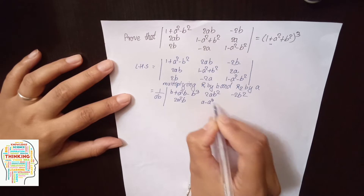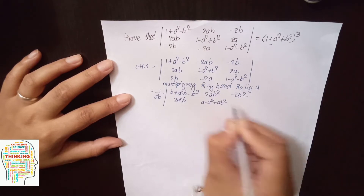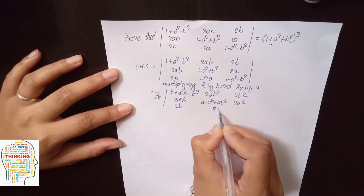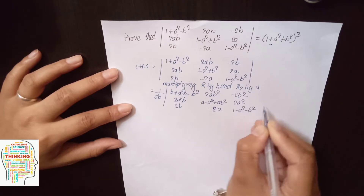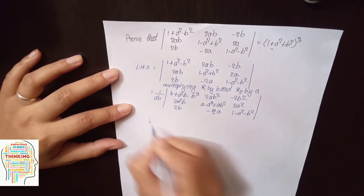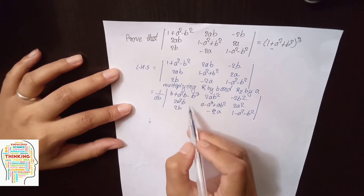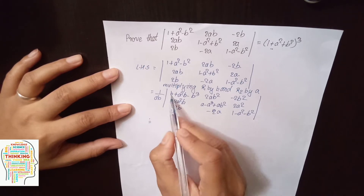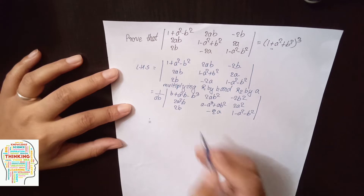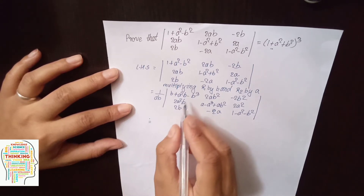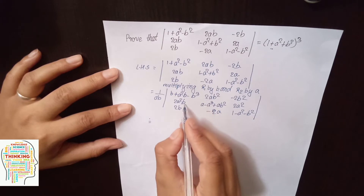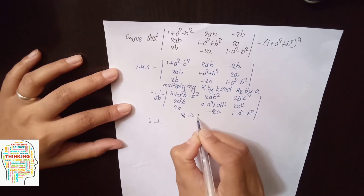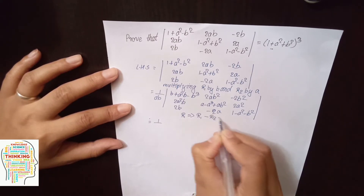So we need to divide by R1 plus b² minus 2b² and this is A·B material, so A minus A³ plus A·b² and you take 2a² — this is as it is. This implies R1 minus R2 minus R3.